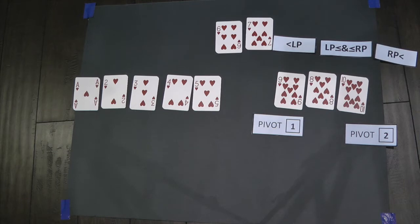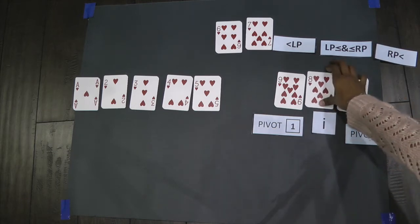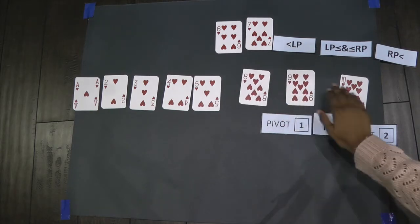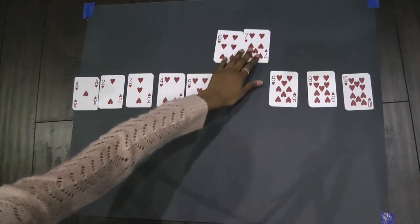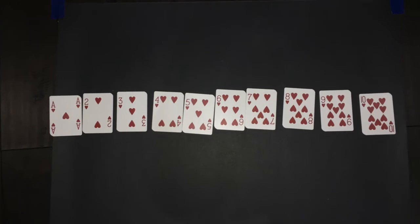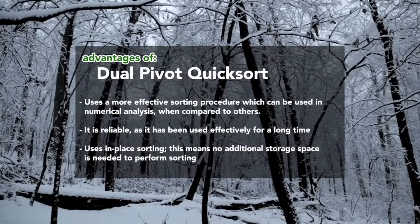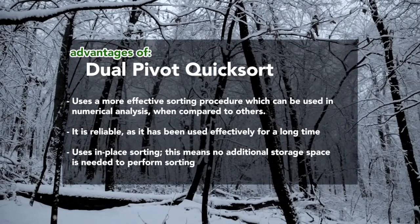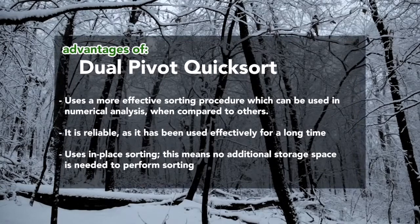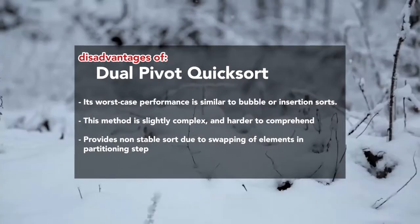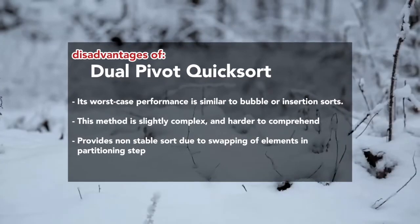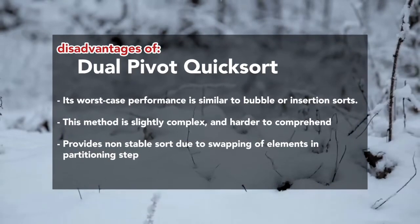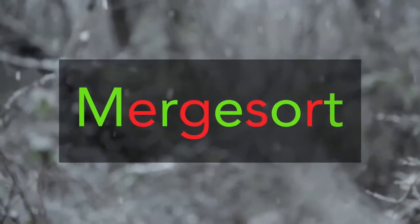The function is called once again for the final unsorted sub-array. All the elements are sorted and they're put back into the original array.